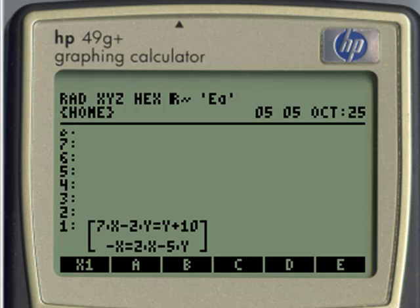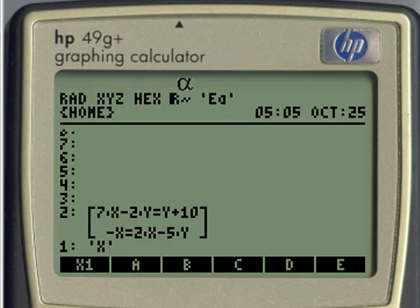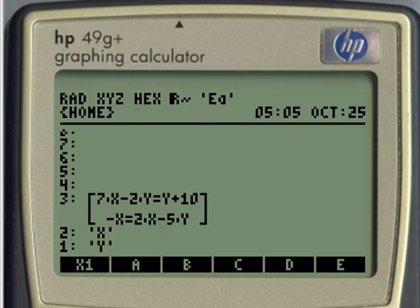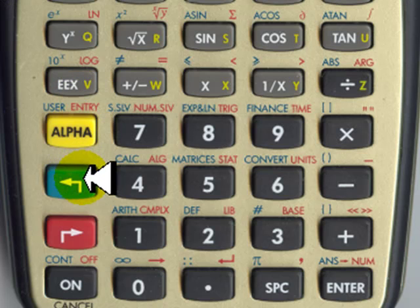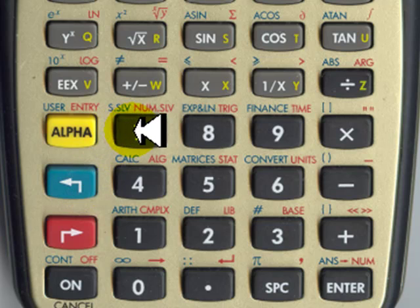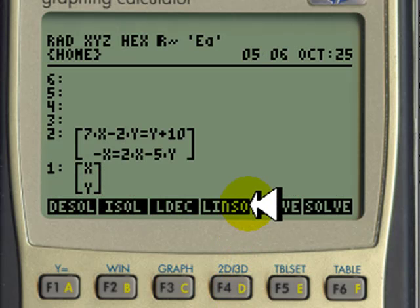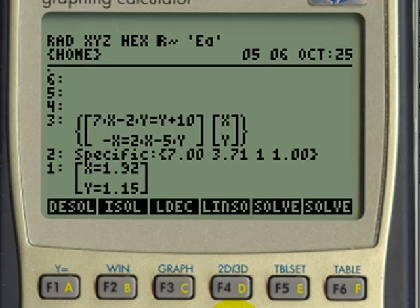Let's now specify for the calculator which are the variables we want to solve for, x and y. X enter, y enter. Make me a vector with two elements. We are ready. We are telling the calculator which is the system of our equations and also in another vector which are the variables we want to solve for. We go to the symbolic solver and ask for a linear solution. There. The solutions are x is 1.92 and y is 1.15.